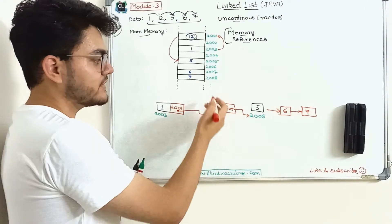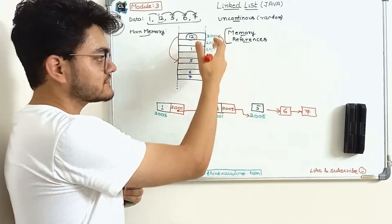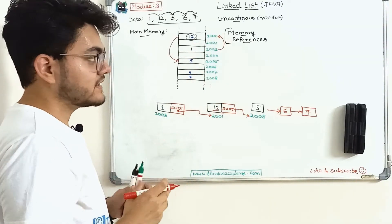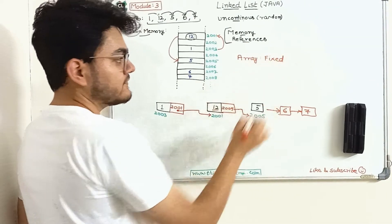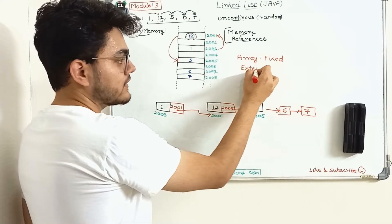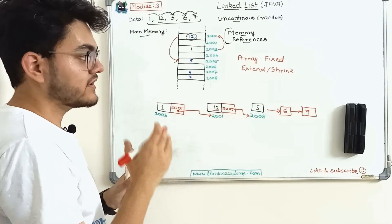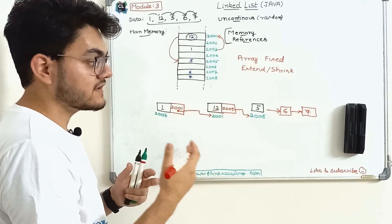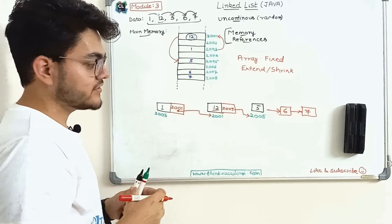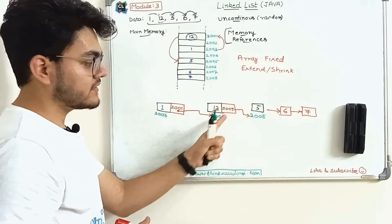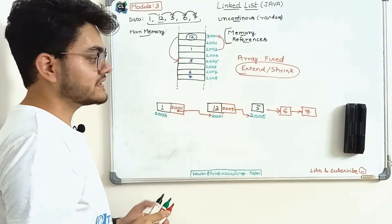Why are we doing this and what are the advantages of storing data at random locations? In arrays, data is stored continuously and the size is fixed — once created, we cannot extend or shrink it. If we create an array of five elements, we cannot add a sixth without creating a new array. With linked list, we have the ability to increase it as much as we want. We just need to give the data and a pointer to the next location — that is a very big advantage: the ability to extend and shrink the data structure.